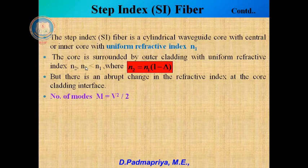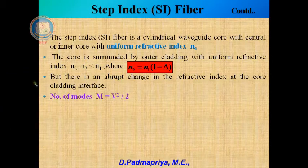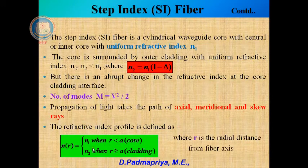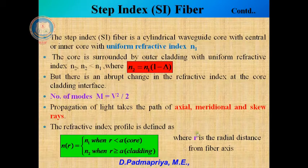N2 equals N1 times (1 minus delta), where delta is the index difference. Normally delta is chosen to be 0.01. The number of modes in step index fiber, M, can be calculated as V squared divided by 2. This type of fiber takes axial, medial and skew paths. The refractive index profile is given by N(r) = N1 when r < a (core), and N(r) = N2 when r ≥ a (cladding), where r is the radial distance from the fiber axis.